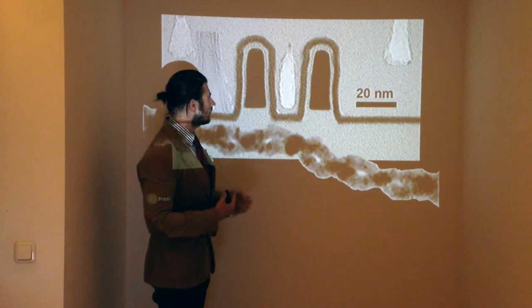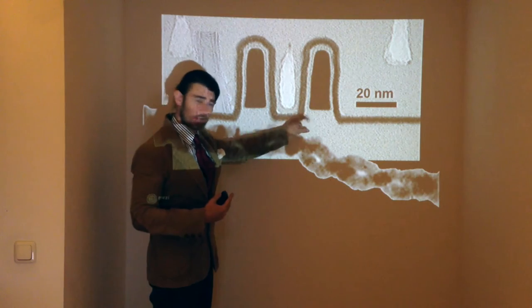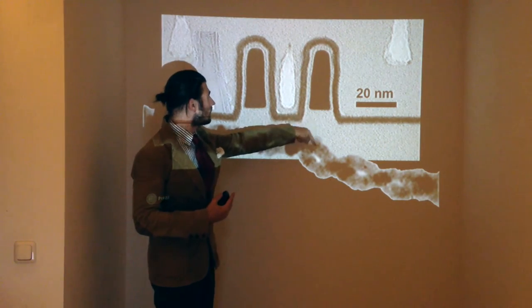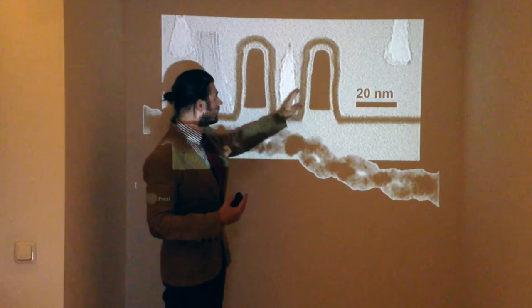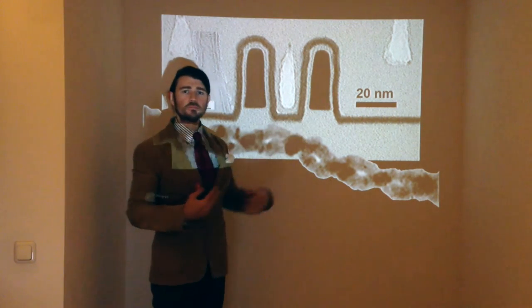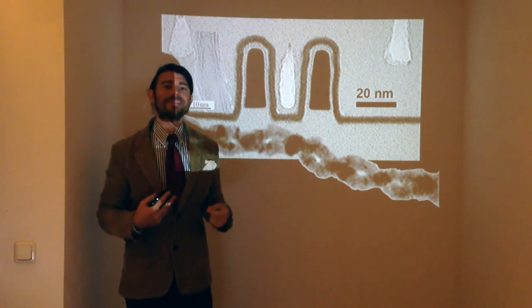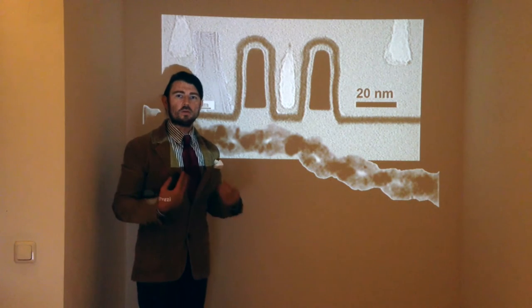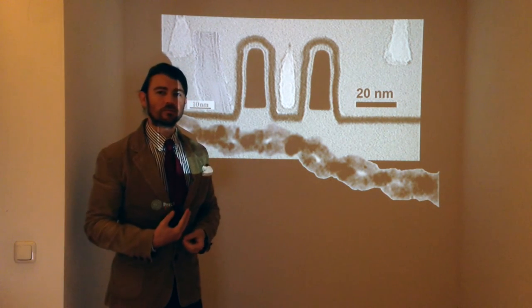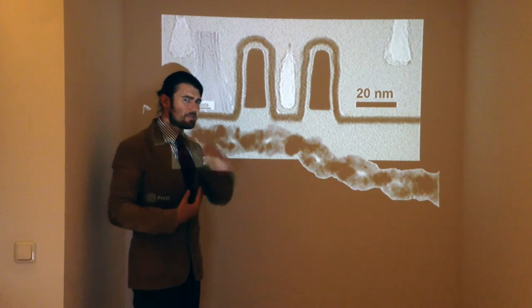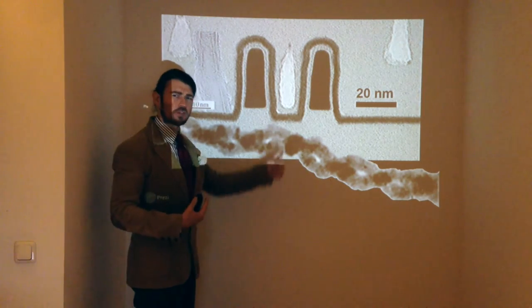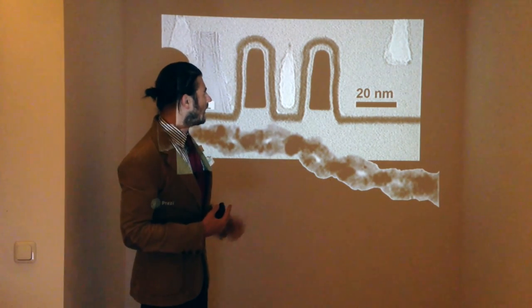Quantum tunneling is where, for example, in this case, an electron could hop right through the walls of this transistor, whereby it would create signal noise degrading the processor. There is one way to fix this, and that would be by upping the voltage, but that's not a really good idea.